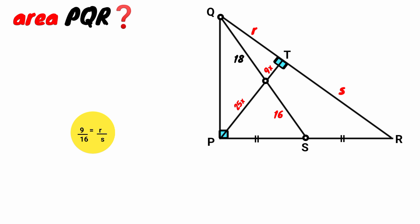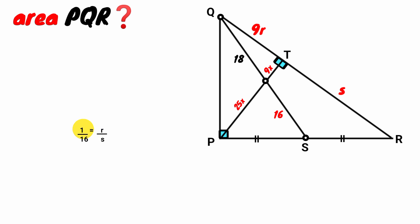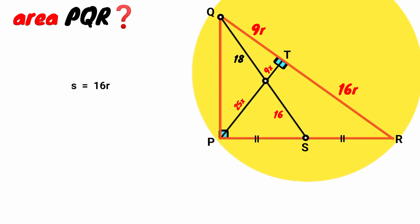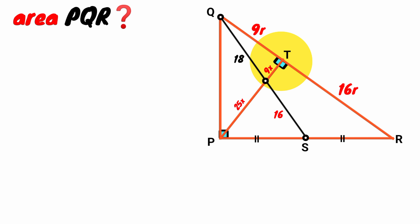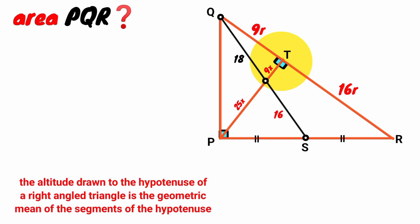We want to do something. This r, the length of this line segment, change it to 9r. So 9 over 16 equals 9r over s. The 9s cancel, giving 1 over 16 equals r over s. Cross multiplying, s equals 16r. Now back to this triangle: it is a right triangle and we have this cevian drawn from the vertex of the right angle perpendicular to the hypotenuse. There is the Altitude on Hypotenuse Theorem.